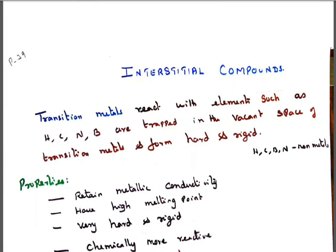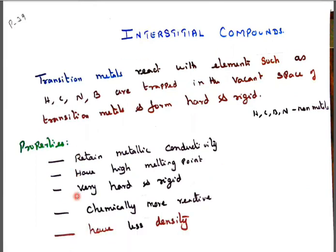So properties of interstitial compounds retain the metallic conductivity, have very high melting point, very hard and rigid, chemically more reactive, have a very less density.